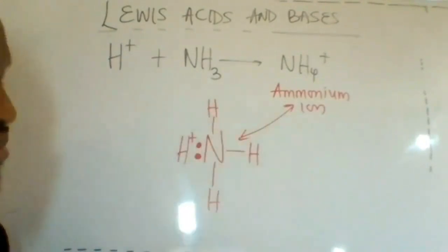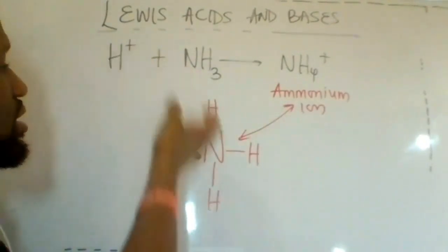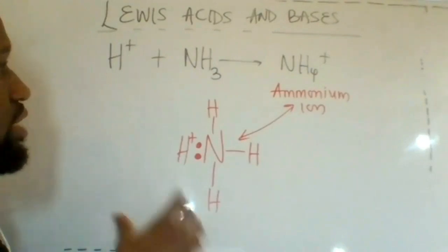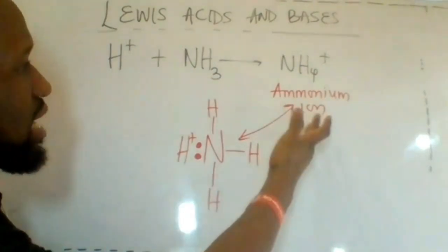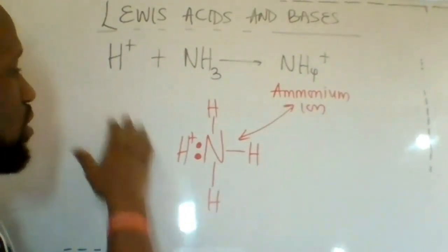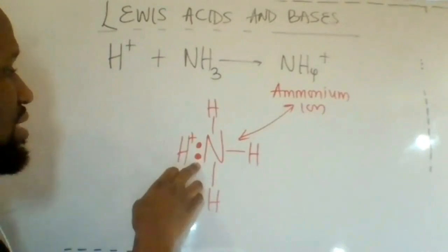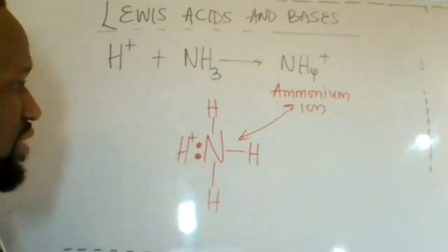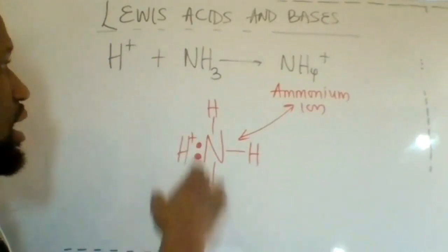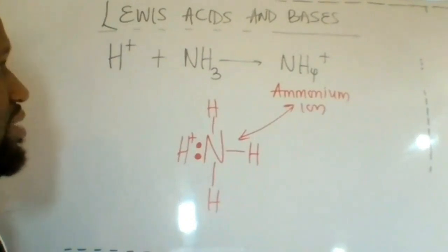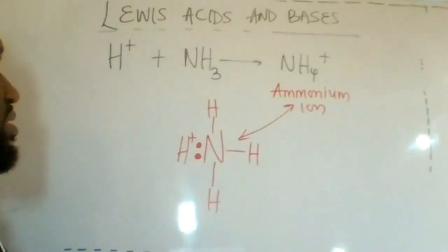In the formation of ammonium ion, H⁺ is the Lewis acid. In the formation of NH₄⁺, which is ammonium ion, H⁺ accepted this lone pair of electrons. Now, ammonia, having the lone pair of electrons, is the Lewis base.